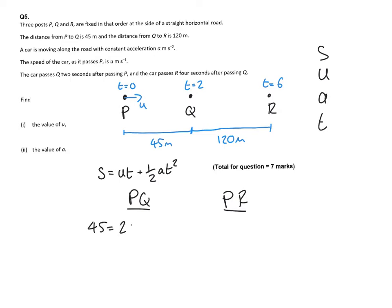Now, if I think about the travel between P and Q and P and R, I will use the letter U twice. I will also have the acceleration, which is constant throughout the motion, appearing in both equations.